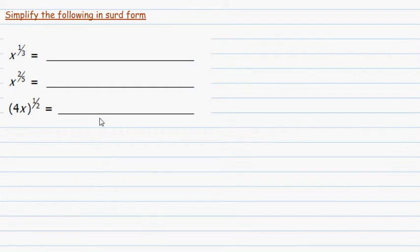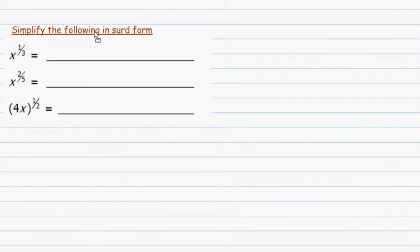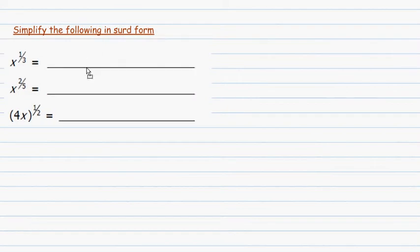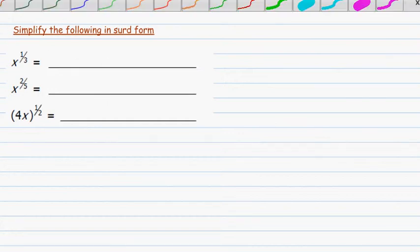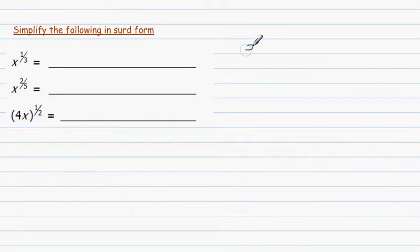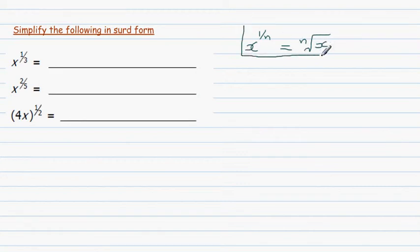In this video I want to go over a few examples on converting from surd form to index form and from index form to surd form. The formula you need to know is: x to the power 1 over n means the nth root of x. This is the rule you need to know.